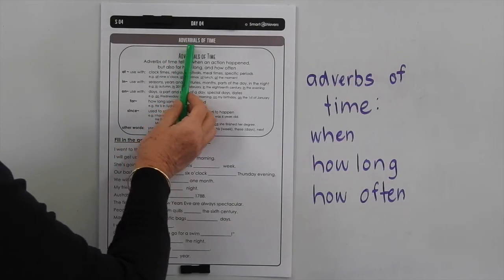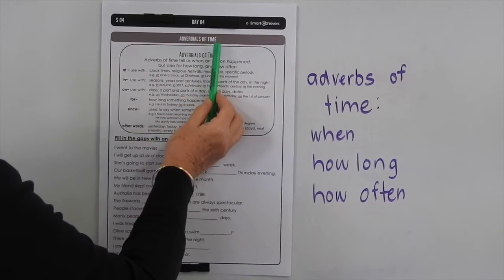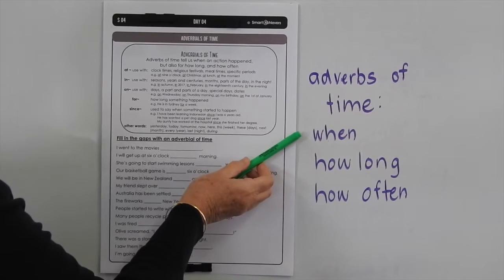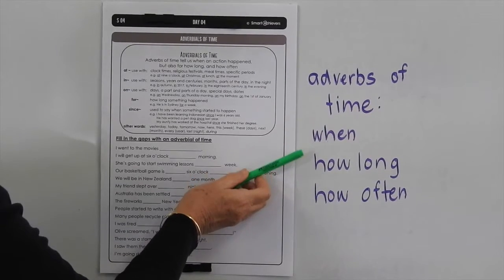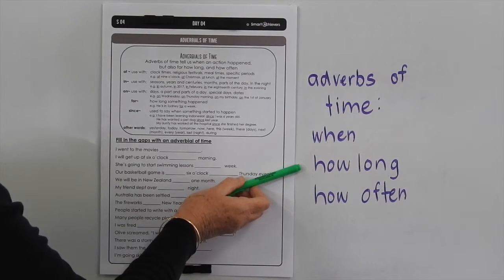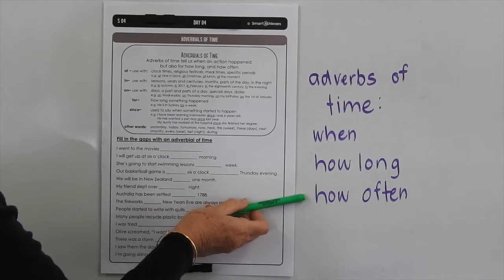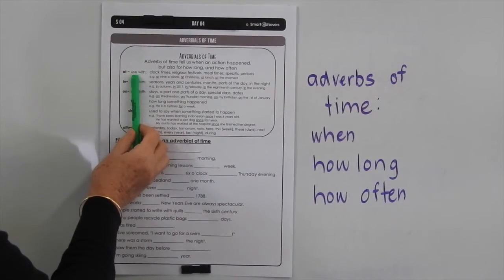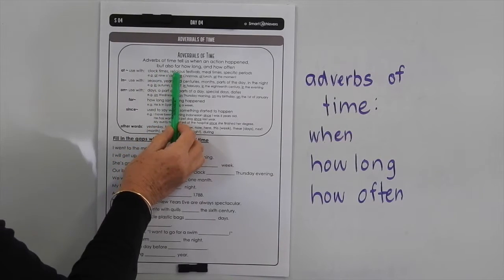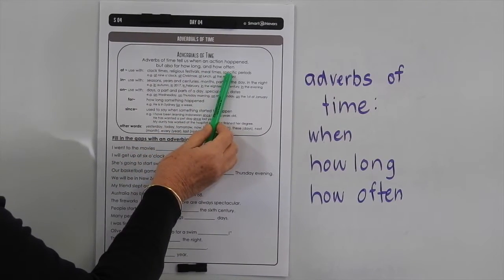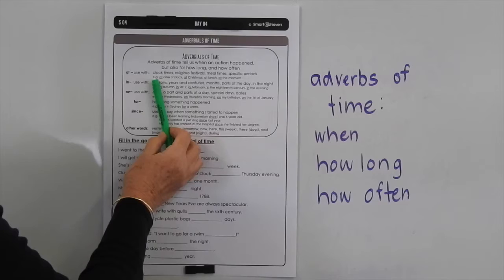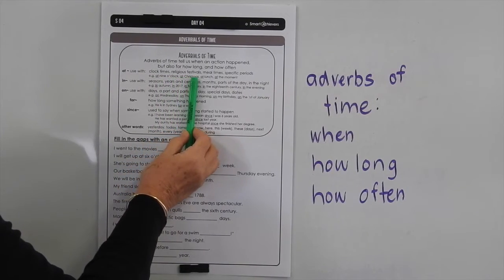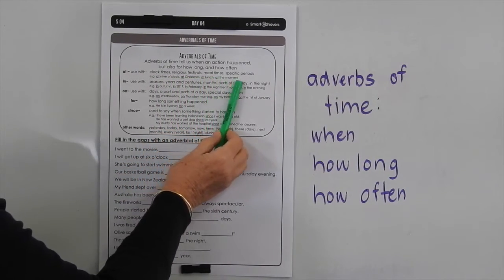Today's activity is adverbials of time. Adverbs of time tell us when an action happened, how long it may have gone for, and how often it may occur. We use at with clock times, religious festivals, meal times, and specific periods — for example: at nine o'clock, at Christmas, at lunch, at the moment.